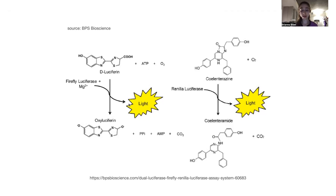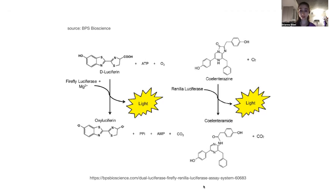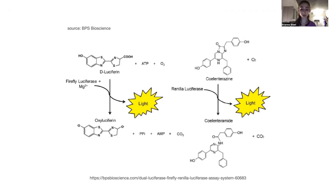For Renilla luciferase, the substrate is coelenterazine, which is oxidized to coelenteramide. Because firefly and Renilla luciferases give off light at different wavelengths and use different substrates, you can actually run a dual assay system — doing one, quenching it, then doing the other — giving you two reporters within a single experimental system. You can also combine these with fluorescent approaches for measuring multiple things within cells.